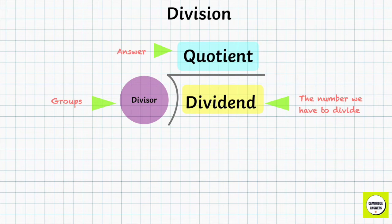So again, dividend is the number we have to divide. Divisor is the groups and quotient is our answer.